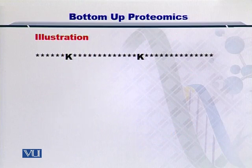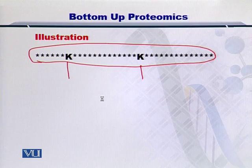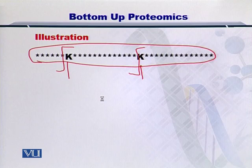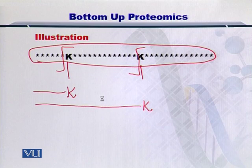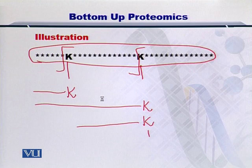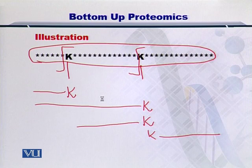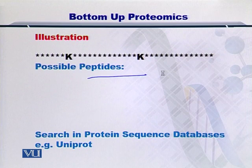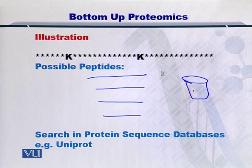Let's take a look at an example. Here you have a protein sequence which contains two lysines. If you treat this protein with trypsin, then trypsin will cleave here and here. The possibilities that you can have include this part of the protein up to a lysine, or another part of the protein up to a lysine, and so on. There are so many possibilities that exist for cutting a protein at the specific site. Once you have obtained all the possible peptides, then you can search them in the protein database, and the matching peptides will tell you which protein they came from.